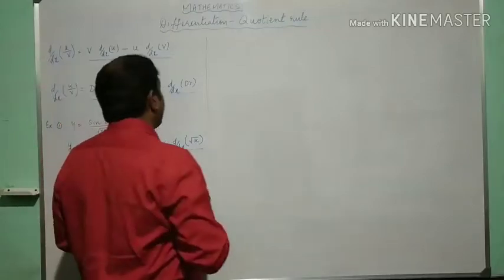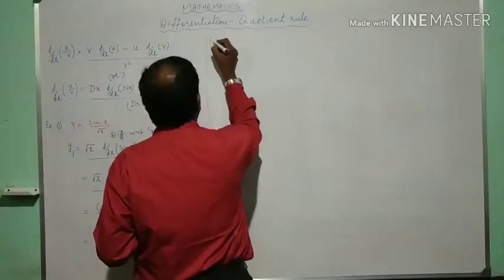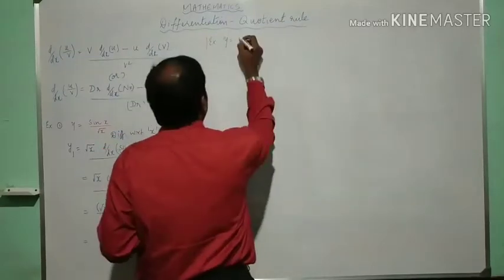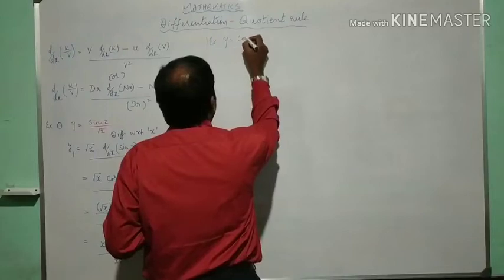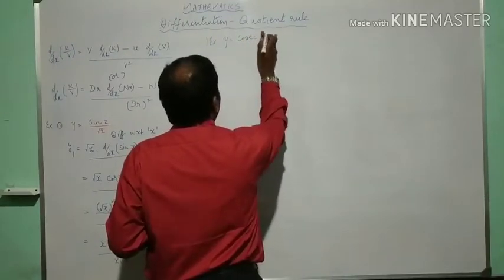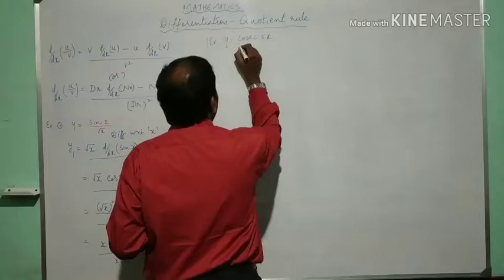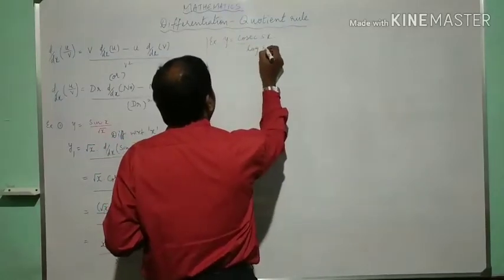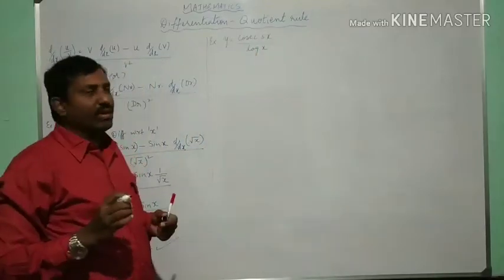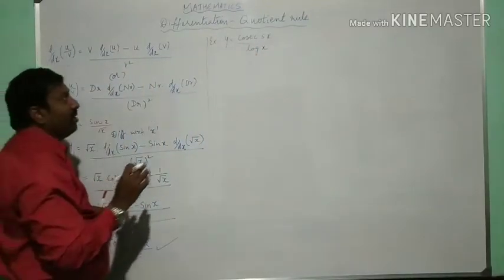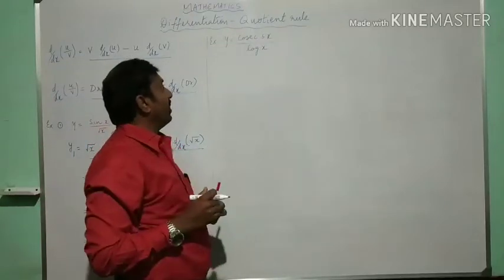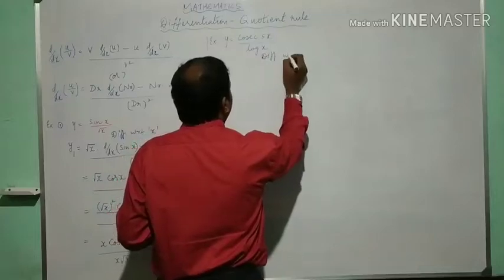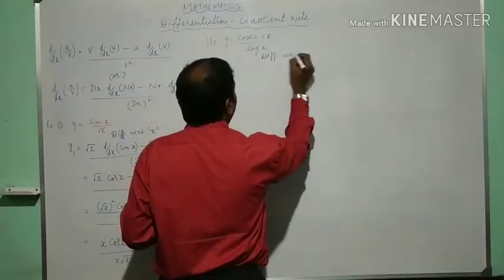Now another example. Y equals cosecant 5x divided by log x. Any example you can solve, just you should know how to apply. Here numerator is cosecant 5x, denominator is log x. Now differentiate this with respect to x.